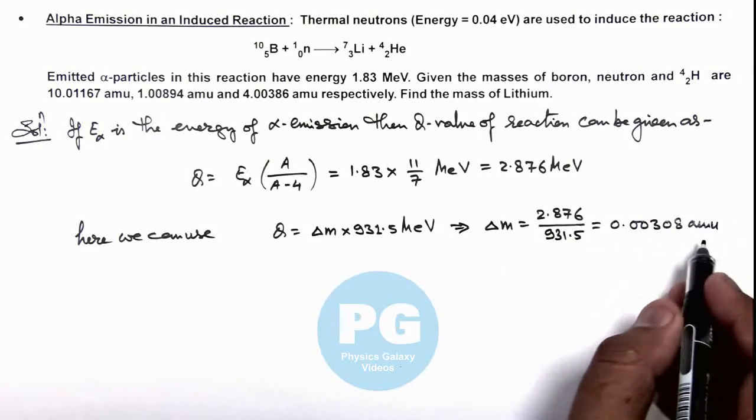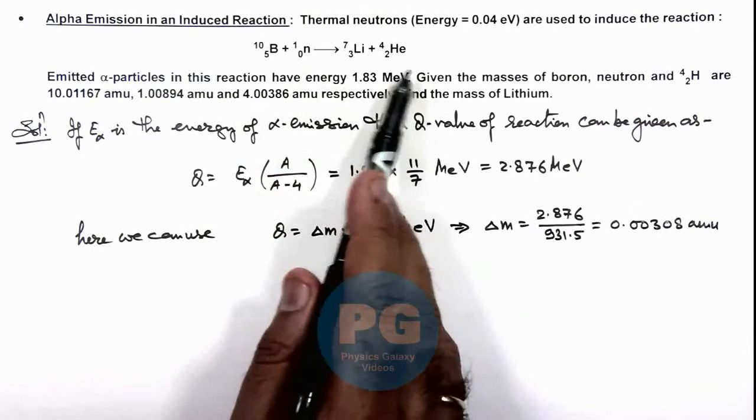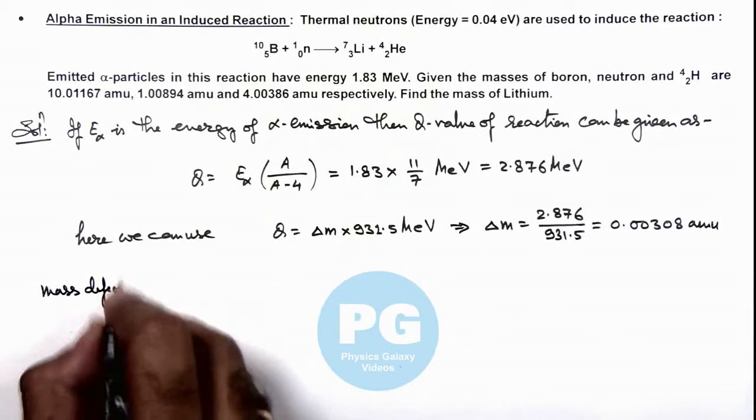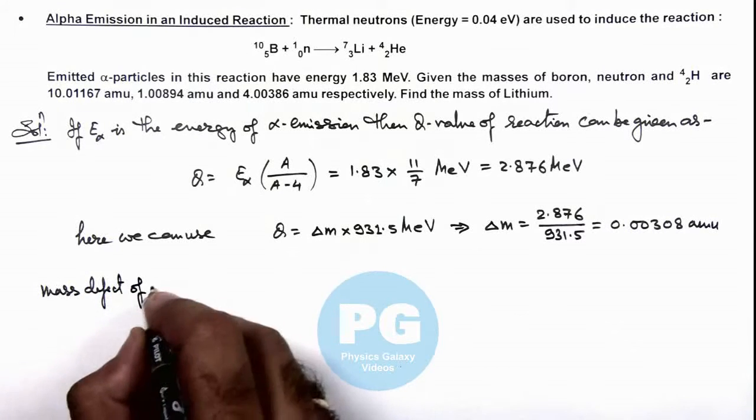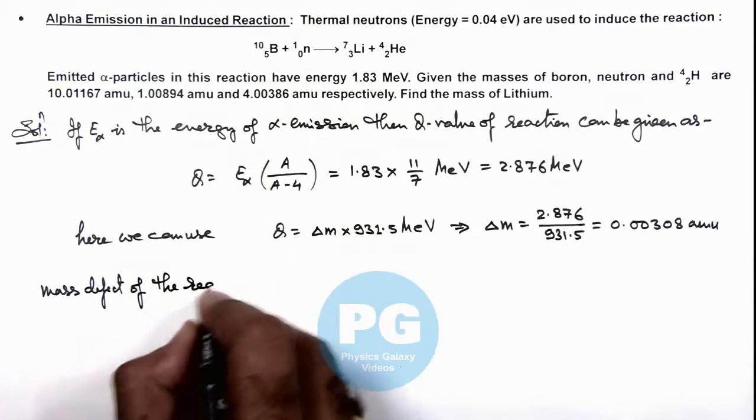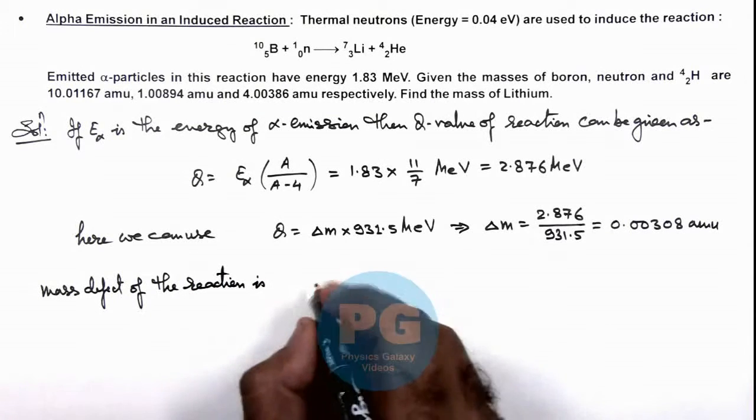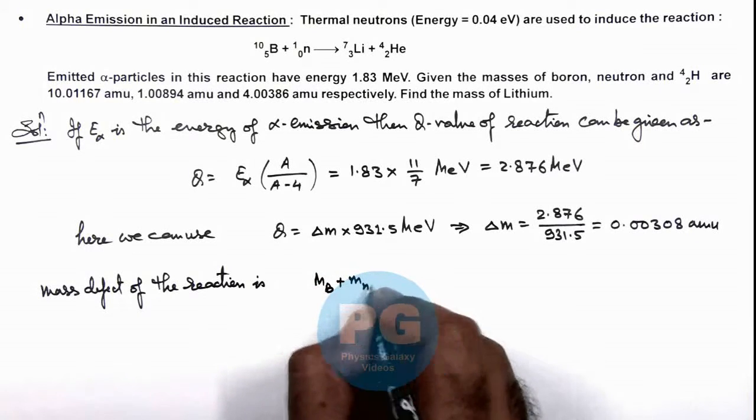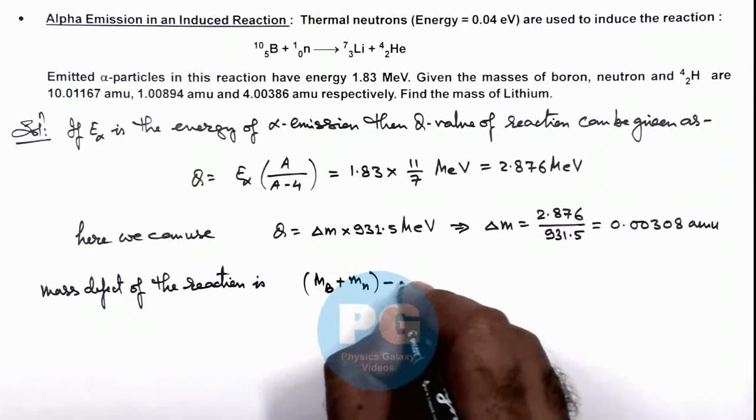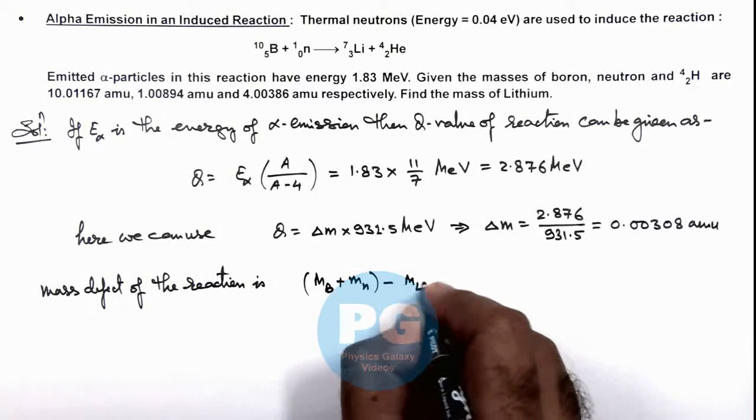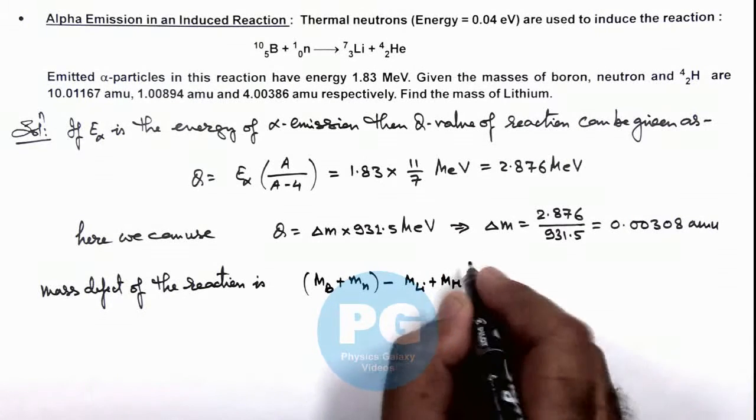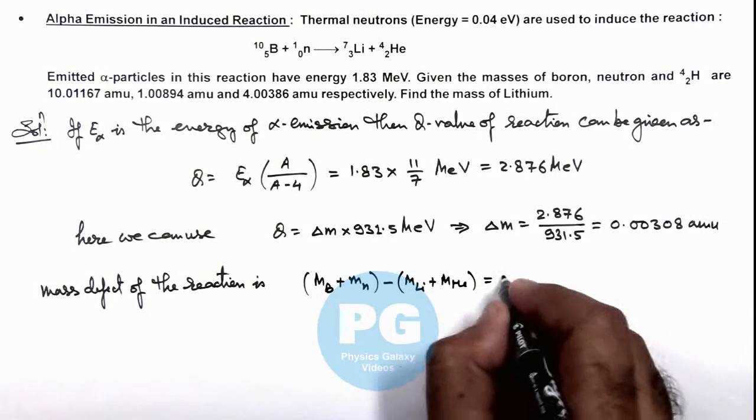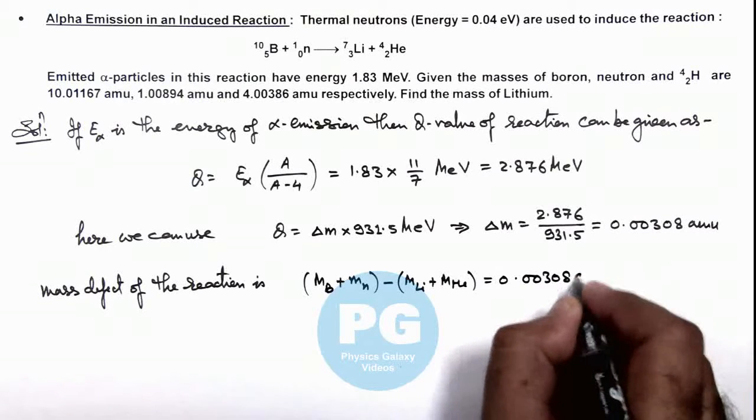So this should be the mass defect. And from this reaction, we can use the mass defect. Mass defect of the reaction function is, here we can write it as mass of boron plus mass of neutron minus mass of lithium plus mass of helium or that of the alpha particle emitted here, and this should be equal to 0.00308 amu.